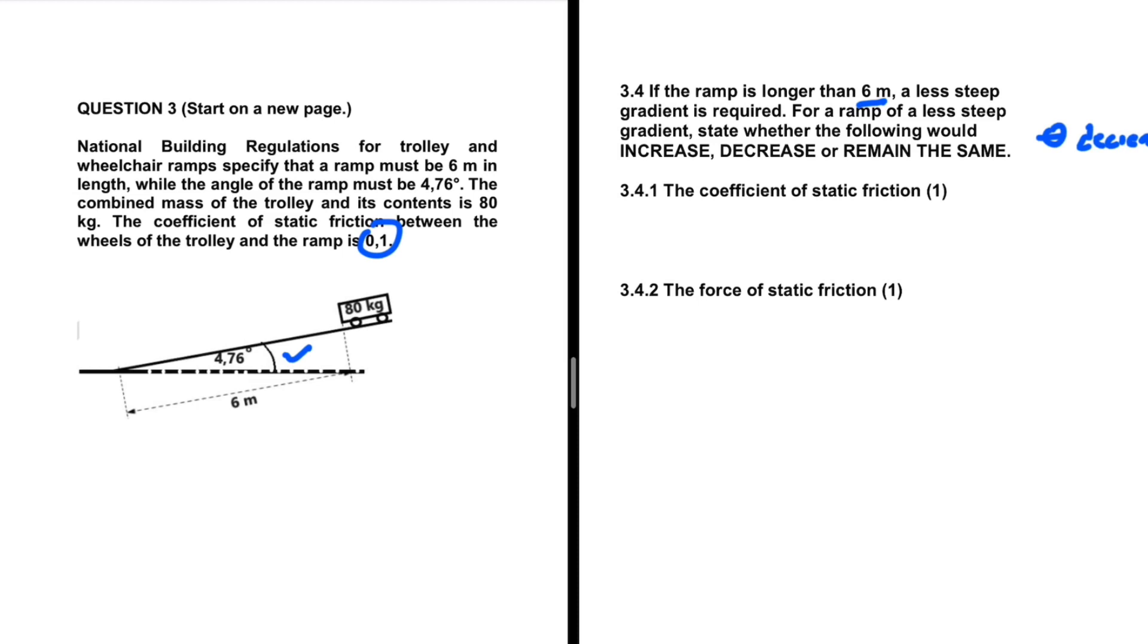So the coefficient of static friction, the coefficient of static friction remains the same. And why do we say so? We are saying so because we know fully well that it is dependent on the material used. If you want to change the coefficient of static friction, you change the material. If the material is still the same, if you still have the same surface, then the coefficient of static friction remains the same.